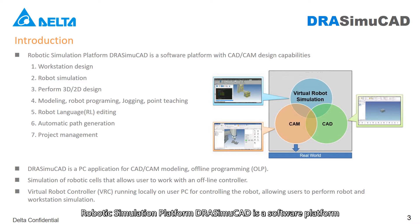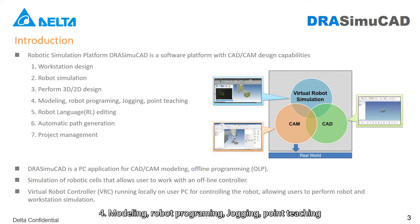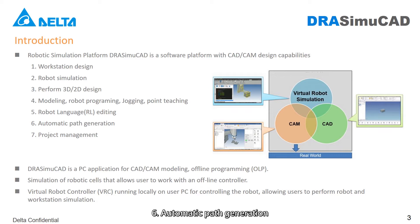Robotic Simulation Platform is a software platform with CAD-CAM design capabilities. Its functions are as follows: First, workstation design. Second, robot simulation. Third, perform 3D and 2D design. Fourth, modelling, robot programming, jogging, and point teaching. Fifth, robot language editing. Sixth, automatic path generation. Seventh, project management.